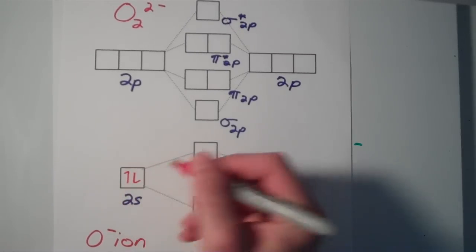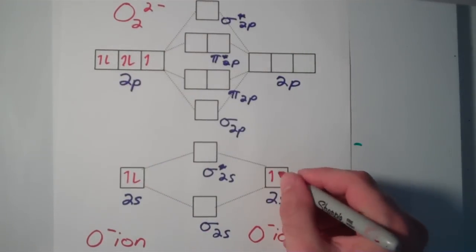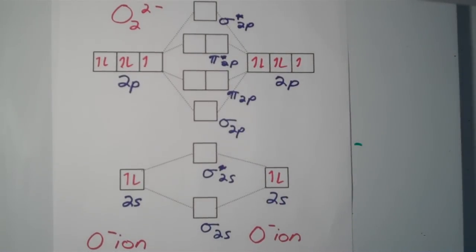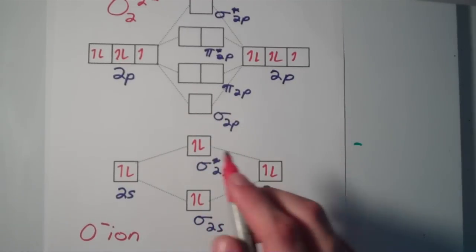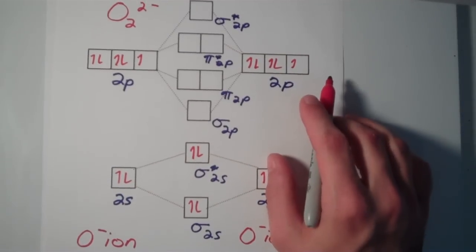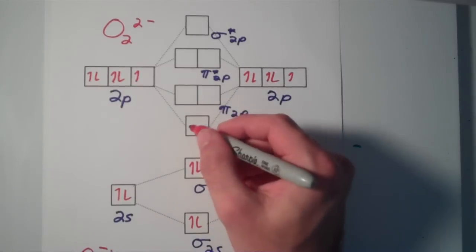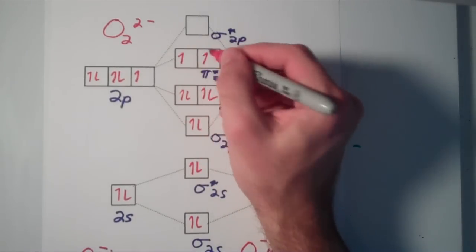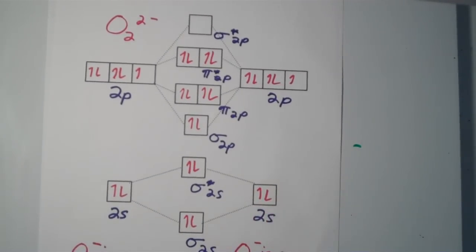We fill in seven valence electrons for each O⁻ ion: one, two, three, four, five, six, seven — and the same for the other one. Then filling in the molecular orbitals: sigma 2s and sigma* 2s fill up, and from the p-orbitals we have ten electrons coming in. So we fill positions one through ten across the p-derived molecular orbitals. This gives us the complete molecular orbital diagram for the O2²⁻ ion.